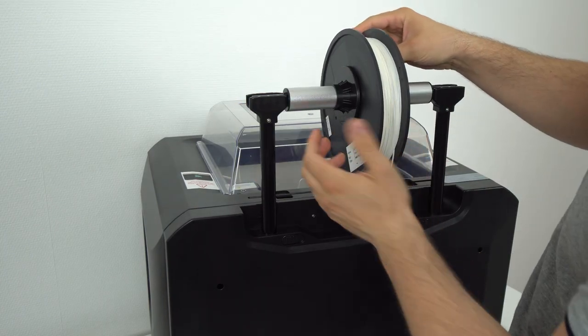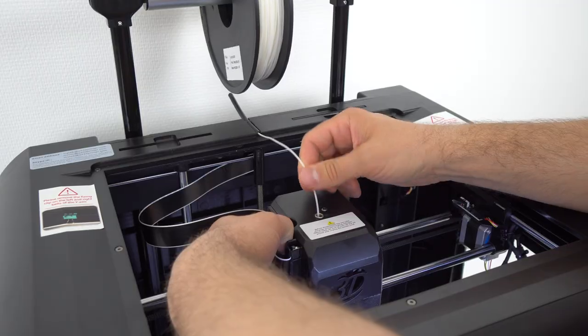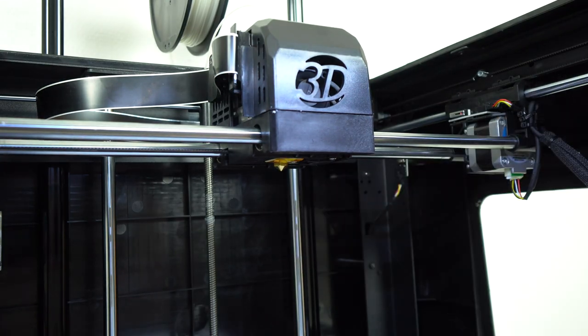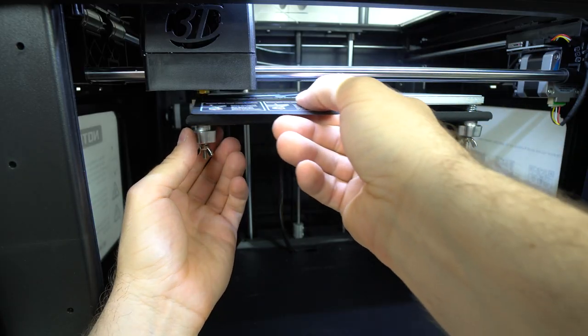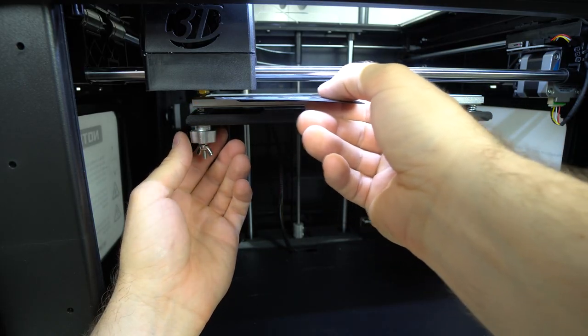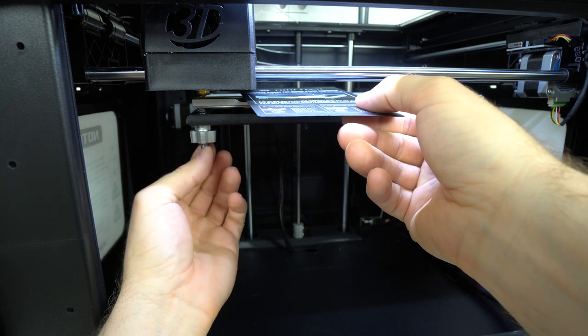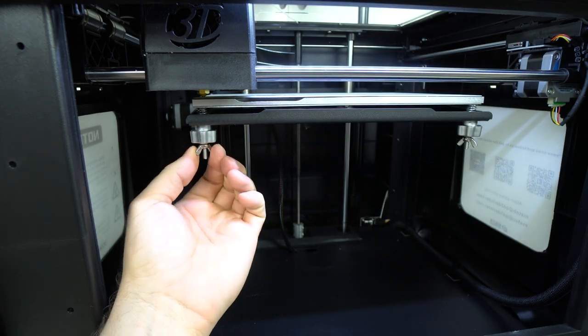Next I installed the filament and leveled the heated bed which takes around 2 minutes and the iMate was ready to run. Since there is no assembling, for the whole unboxing and setup you need around 15-20 minutes which makes this 3D printer very beginner friendly.